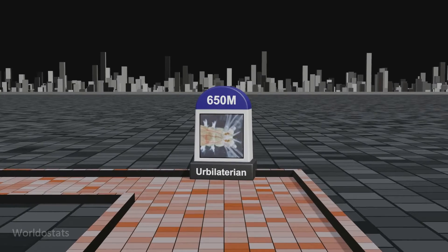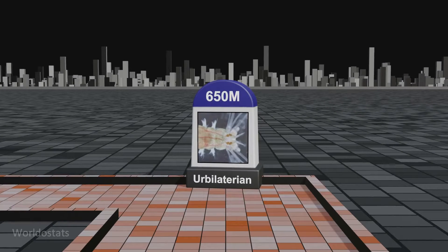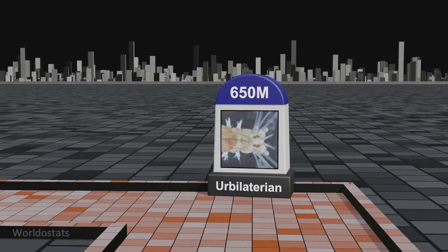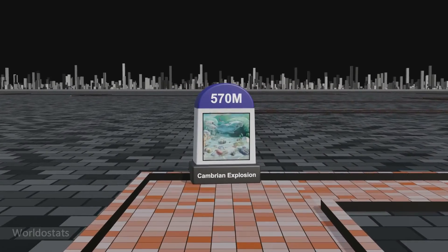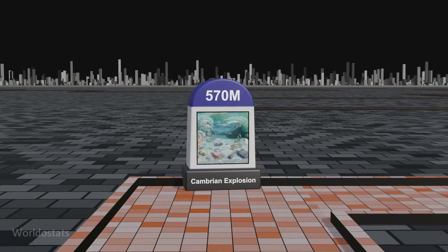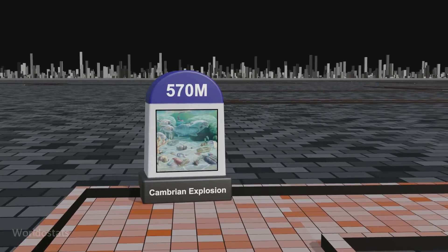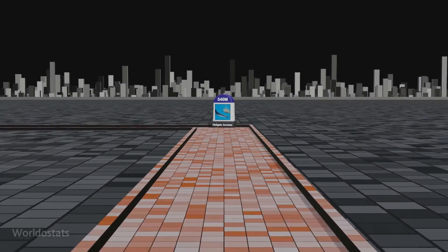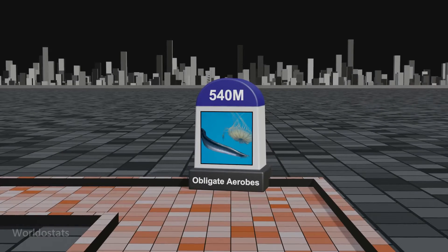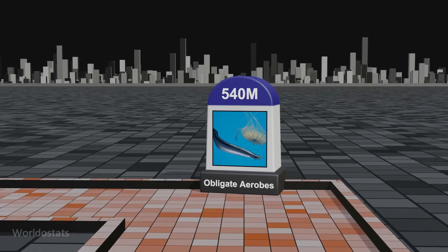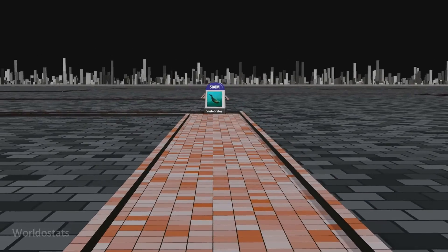The herbilitarian, an evolutionary ancestor with bilateral symmetry and a distinct front and back axis, appeared approximately 650 to 600 million years ago, laying the foundation for diverse animal body plans. The Ediacaran Cambrian explosion, occurring around 570 million years ago, marked a pivotal period characterized by the rapid diversification of multicellular life forms. Obligate aerobes — organisms requiring oxygen for survival — evolved approximately 540 million years ago, coinciding with increased atmospheric oxygen levels during the Cambrian explosion.